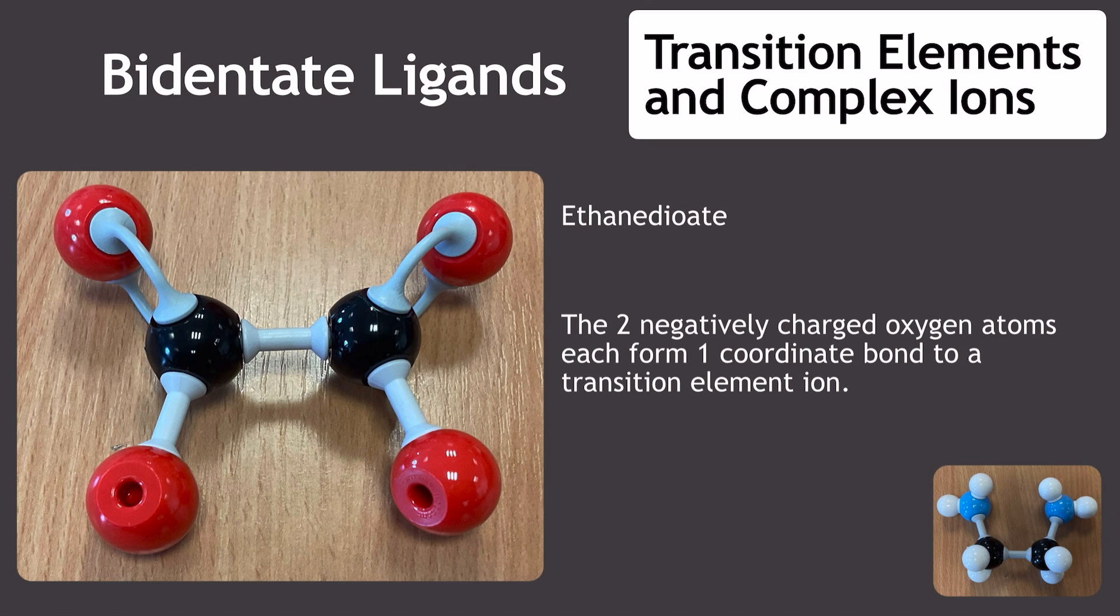Another very common bidentate ligand is ethane dioate. This time, we've actually got two negatively charged oxygens within the structure that are each going to donate a lone pair of electrons to each form a coordinate bond to the transition element ion.